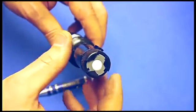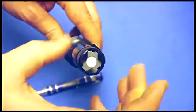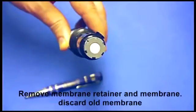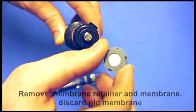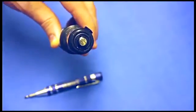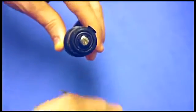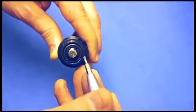The first thing you want to do is remove the membrane assembly. First take off the membrane retainer, then you can discard this membrane head and throw that away as it's been used. The last thing you want to do is remove the o-ring.